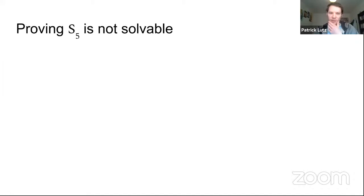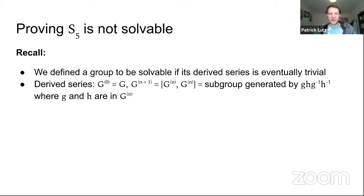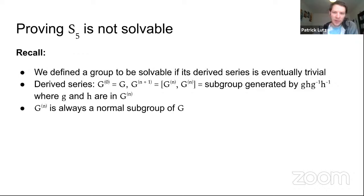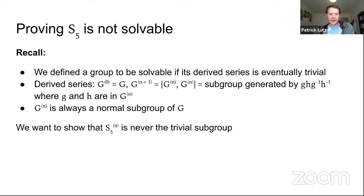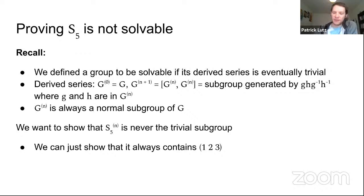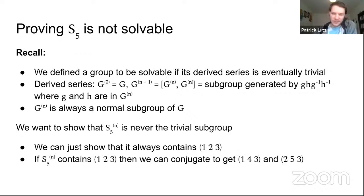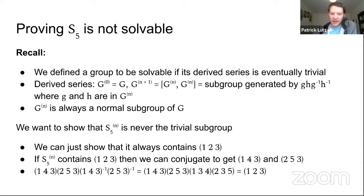The last mathematical thing I want to discuss is our idea for proving S5 is not solvable. Solvable means the derived series is eventually trivial. The derived series always gives you normal subgroups. We want to show the derived series of S5 never hits the trivial subgroup — it's enough to show there's some element that always stays in it, like the three-cycle (1 2 3). The induction: if you contain (1 2 3) and you're normal, you can conjugate to get two other three-cycles, and the commutator of those two three-cycles is (1 2 3). So (1 2 3) always stays in the derived series and it never hits the trivial subgroup. This proof is a lot easier than showing A5 is simple.